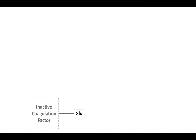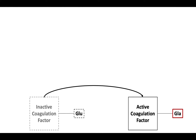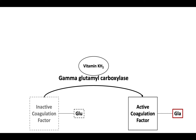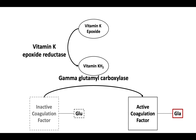The conversion of the inactive coagulation factor to its active state requires the action of gamma-glutamylcarboxylase. This enzyme needs its cofactor, vitamin K hydroquinone, or KH2. KH2 is produced when vitamin K epoxide is reduced to form the hydroquinone. Vitamin K epoxide is reduced by the enzyme vitamin K epoxide reductase, or VKOR.